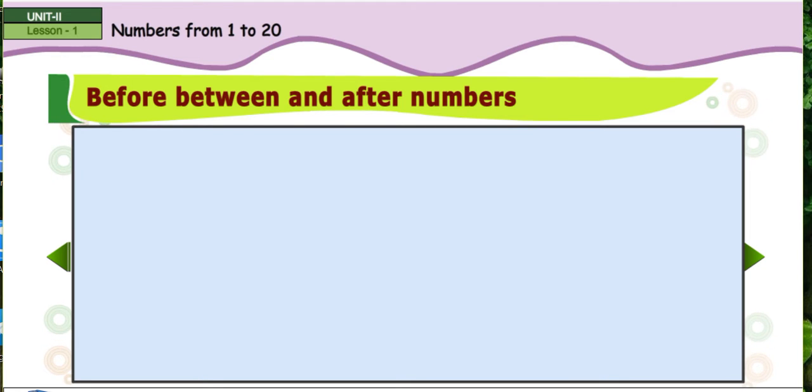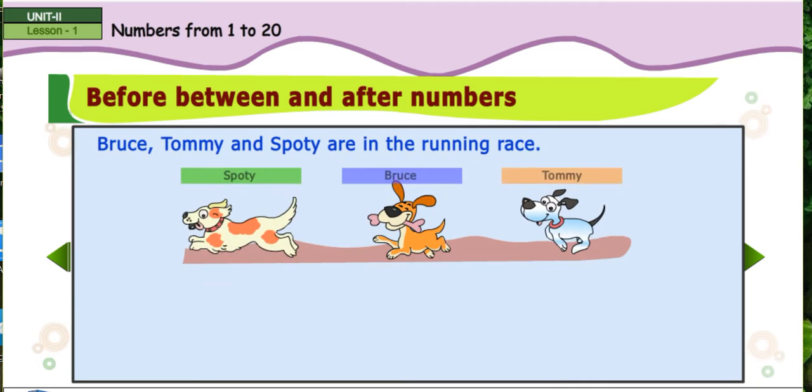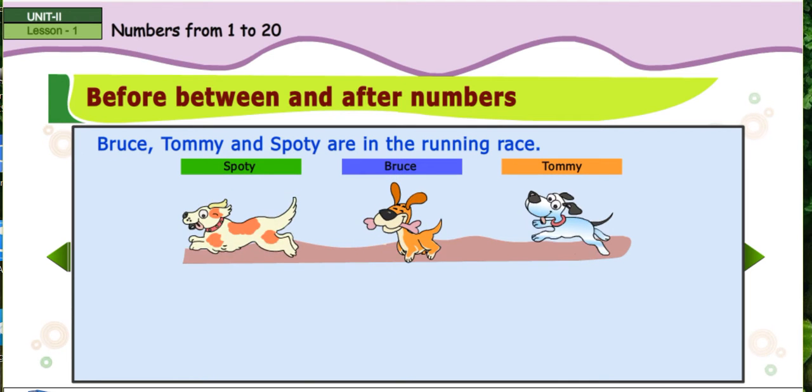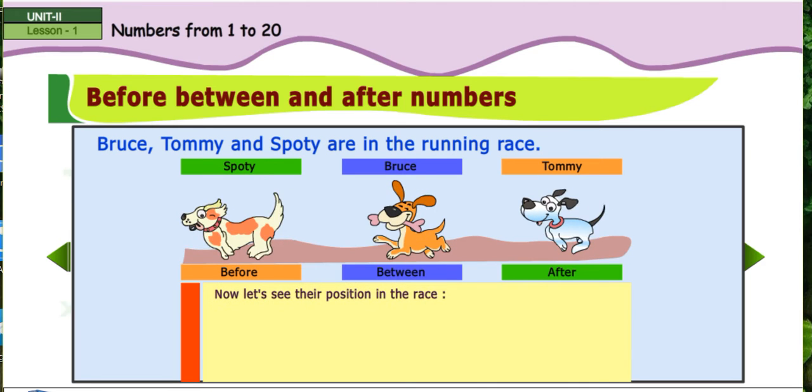Numbers. Bruce, Tommy and Spotty are in the running race. Now let's see their position in the race.